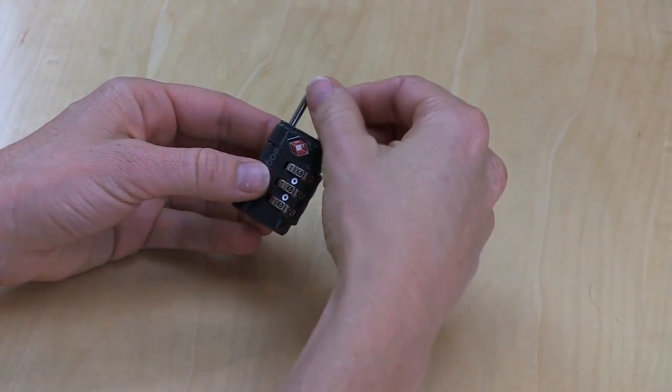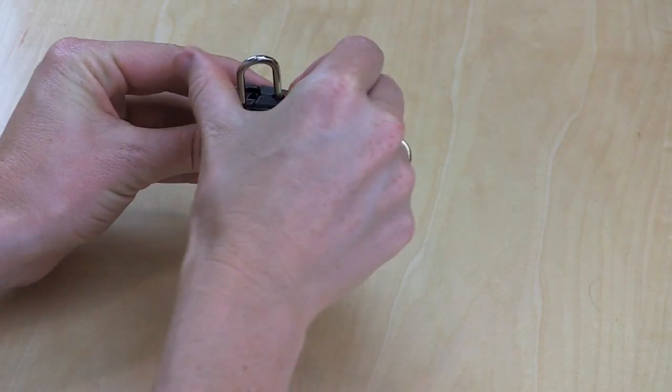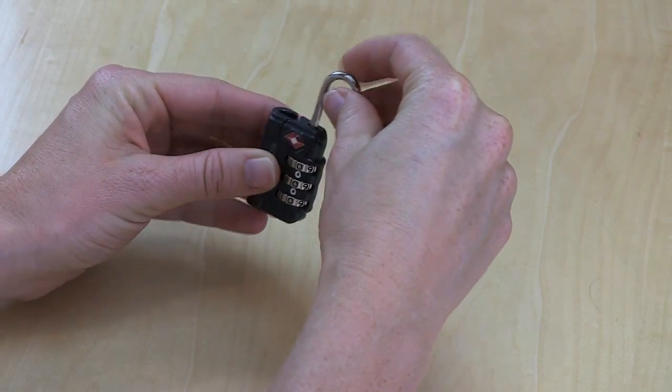To set the combination on your lock, pull up the shackle and rotate it 180 degrees counterclockwise.